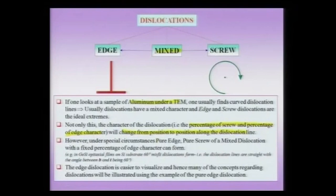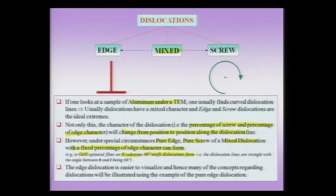However, there are very special circumstances where a pure edge, pure screw, or a mixed dislocation of a very fixed percentage can be formed. A nice example is an epitaxial film of germanium-silicon solid solution on a silicon substrate. In this case, you find 60-degree misfit dislocations form — these are straight dislocations with a fixed character. What I mean by the 60-degree character will also become clear when I take up the edge and screw components of a curved dislocation. In this case, the angle between b and t is 60 degrees.